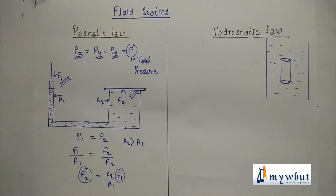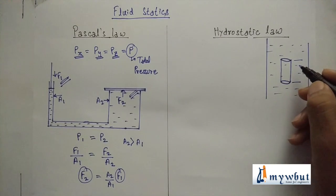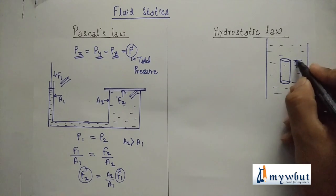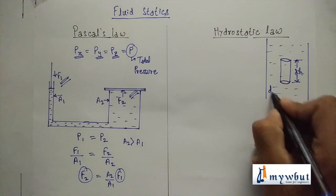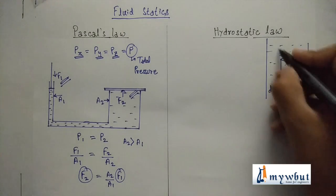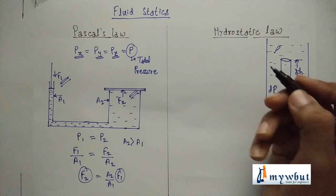After Pascal's law, now we will learn about hydrostatic law. Here take a cylindrical fluid element with height dh. The pressure difference is dp. If the density of the fluid is rho and g is the acceleration of gravity,